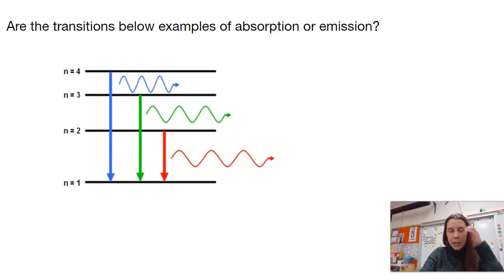In this example here, we have a transition from 4 to 1 that releases light, one from 3 to 1 that releases light, and from 2 to 1 that releases light. All of these are examples of emission. If it was absorption, the arrows would have to be going up.